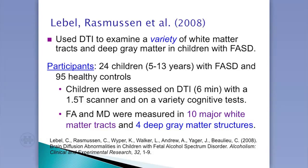We did a study published in 2008 where we looked at white matter integrity using diffusion tensor imaging across a number of different tracks in the brains of kids with FASD. We had 24 children aged 5 to 13 and 95 control children. They were assessed in an MRI scanner — the DTI portion takes only six minutes, then another 15 minutes to get other brain imaging parameters like brain volume and brain size.